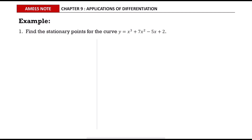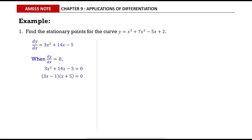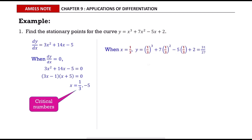To find stationary points, find dy/dx first. Since a stationary point occurs when dy/dx equals zero, substitute and set it to zero, then factorize and solve for x. These values of x are also called critical numbers. Then find the value of y for each value of x and state the answer.